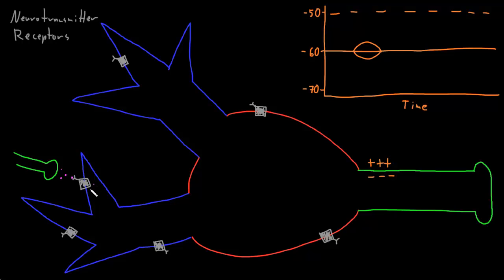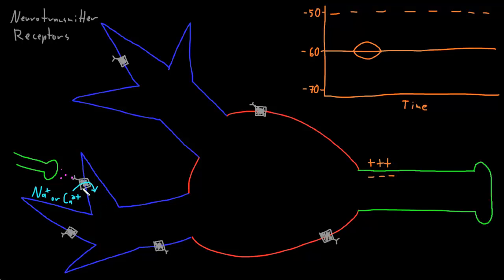If a channel opens that is selective for only one type of ion, the membrane permeability for that ion is increased, causing the potential of the membrane around the channel to move toward the equilibrium potential of that ion — the membrane potential at which that ion has balanced electrical and diffusion forces with no net movement. If the channel is a sodium or calcium channel, opening will usually cause a depolarization because these cations flow into the neuron, bringing positive charges into the negative inside, since both their electrical and diffusion forces drive them into the neuron.